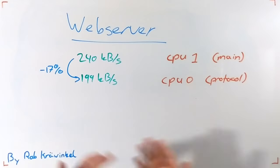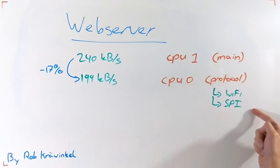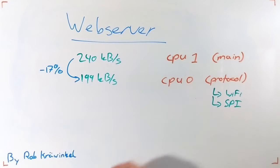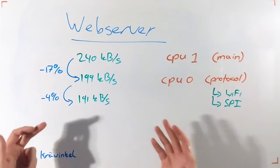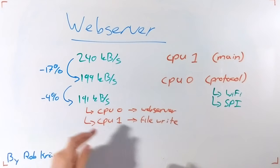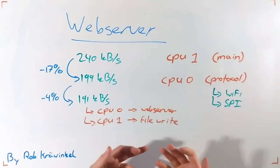This is due to the fact that this CPU core also runs things like the Wi-Fi module and the SPI communication, both of which are required for the web server to operate. A final 4% performance hit occurs when a file write is happening simultaneously on the application core, and the system is optimized well.